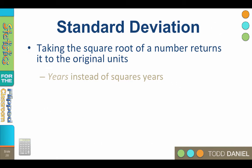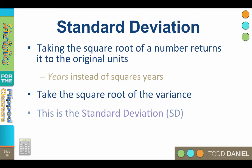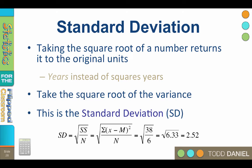The solution is the standard deviation. When a number is squared, taking the square root returns it to the original units. Now we can talk about variability in years instead of squared years. Since the variance is squared, we can unsquare it using the square root. This unsquared variance is the standard deviation, abbreviated SD. The standard deviation is the square root of the variance.